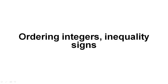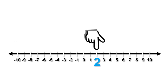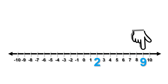We are going to be looking at ordering integers, both positive and negative numbers. Let's start by ordering the numbers positive 2 and positive 9. We can use a number line to help us. Here are positive 2 and positive 9 on a number line.